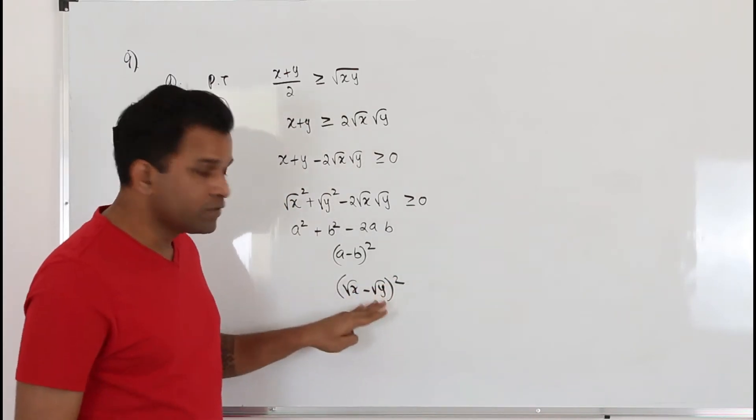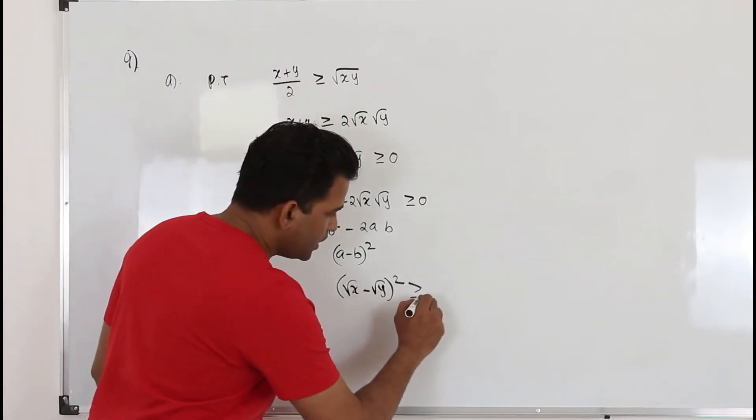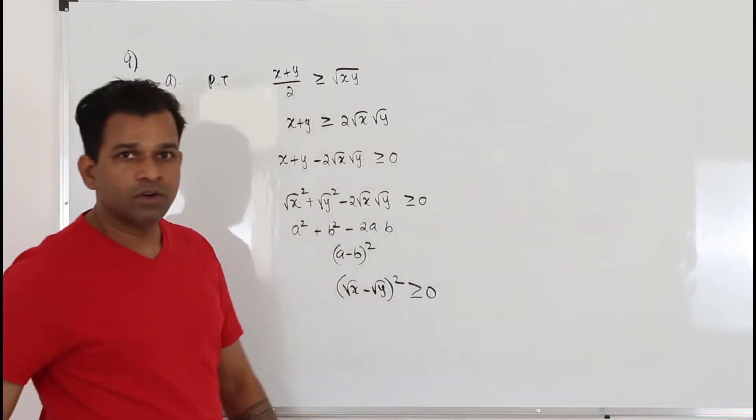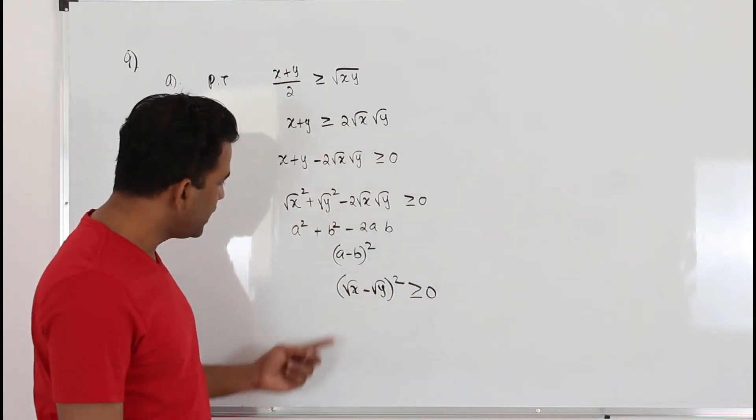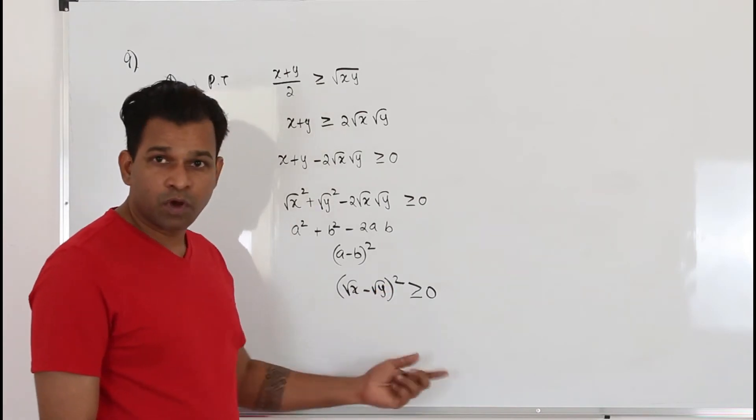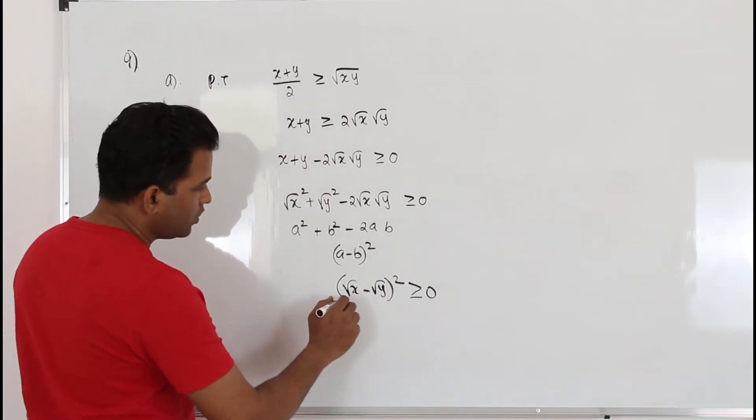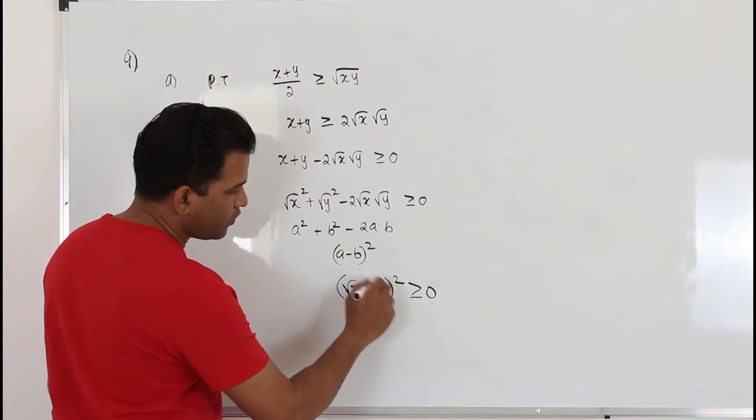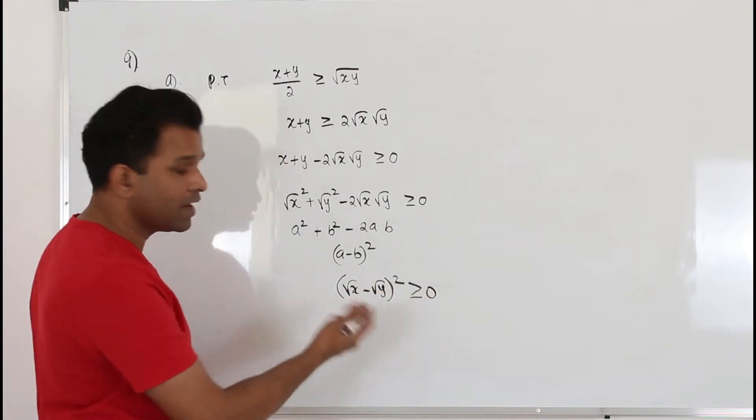So you can write it as square root of x minus square root of y whole square. A square of something is definitely greater than or equal to 0. So you can finally write it as square root of something is always positive. Therefore, square root of x minus square root of y whole square is always positive. Hence, proof.